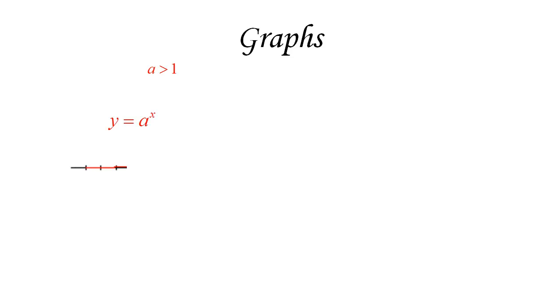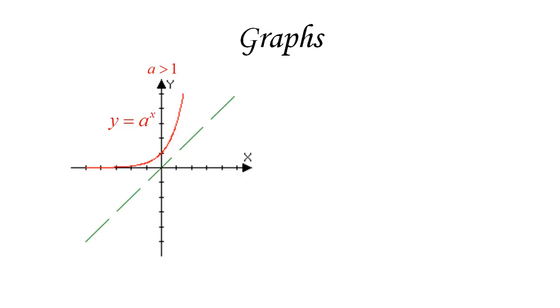What do the graphs of logarithmic functions look like? We can get the graph of an inverse function easily. For a greater than one, an exponential function has a particular graph. To get the graph of the corresponding logarithm, we draw the diagonal line and reflect the original graph around it — and that gives us the graph shown at the beginning.